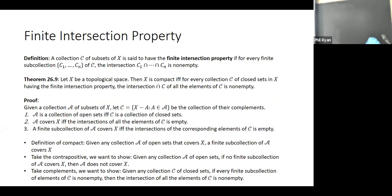The proof follows from just the following observation. If you have a collection of subsets of the space, consider the collection of their complements. If we have a collection of open sets, their complements give a collection of closed sets. From the de Morgan laws, if you have a cover of X, that can only happen if the intersection of all the complements is empty. And if you have a finite sub-collection covering X, it can only happen if the intersection of the corresponding complements is empty.